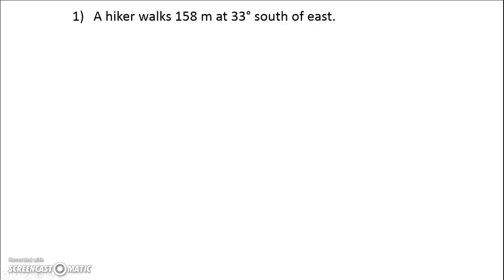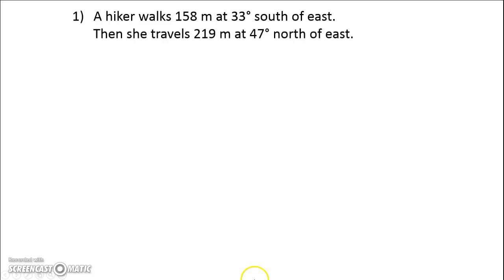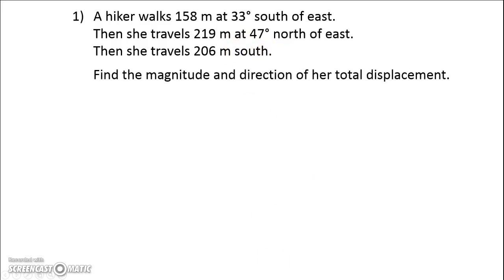Let's take a problem like this. A hiker walks 158 meters at 33 degrees south of east — that's two-dimensional. The hiker then travels 219 meters at 47 degrees north of east, another 2D vector. Finally, she travels 206 meters south. South is just along the y-axis. We have to find the magnitude and also the direction of her total 2D displacement.